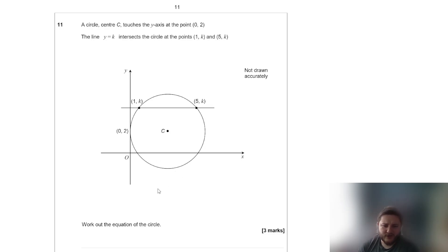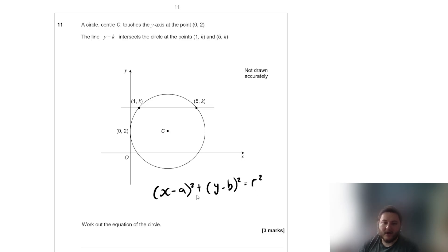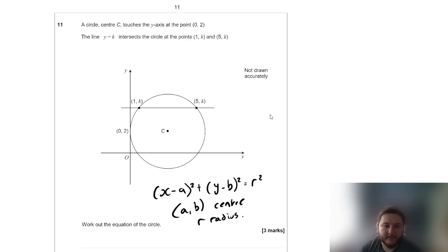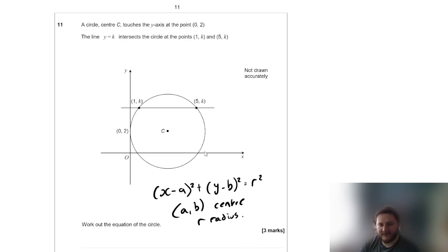The equation of a circle is written in the form (x − a)² + (y − b)² = r², where (a, b) is the centre and r is the radius. We need two pieces of information: the centre and the radius. Let's start with finding the centre.